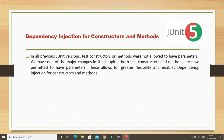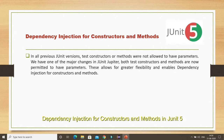The first point says that in all previous JUnit versions, test constructors or methods were not allowed to have parameters. One of the major changes in JUnit Jupiter is that both test constructors and methods are now permitted to have parameters, which allows for greater flexibility and enables dependency injection for constructors and methods.